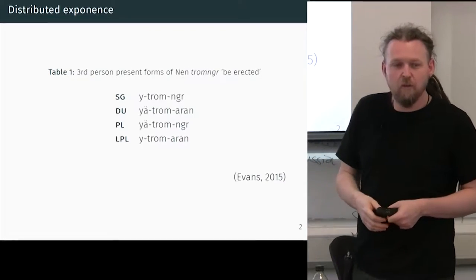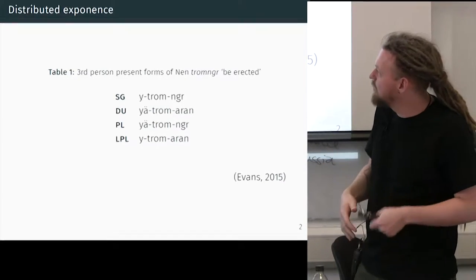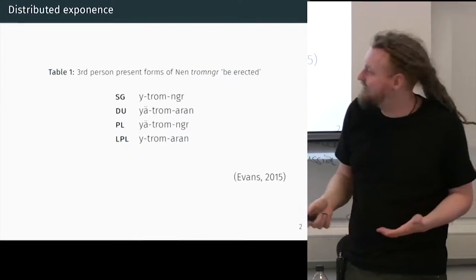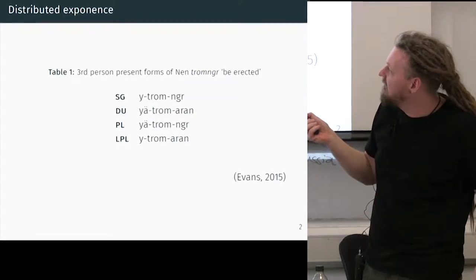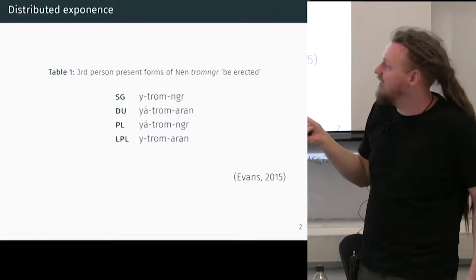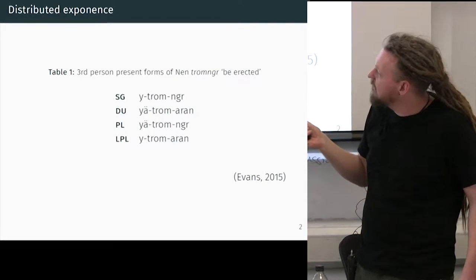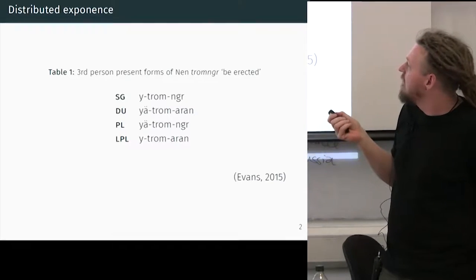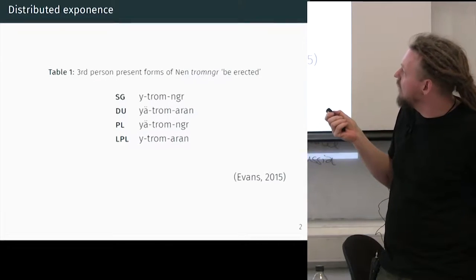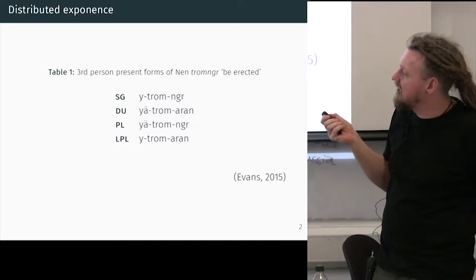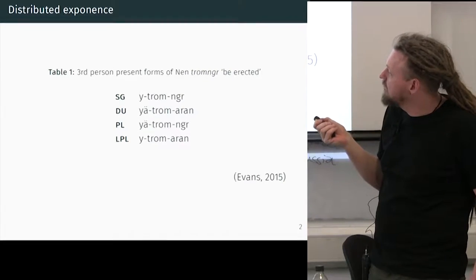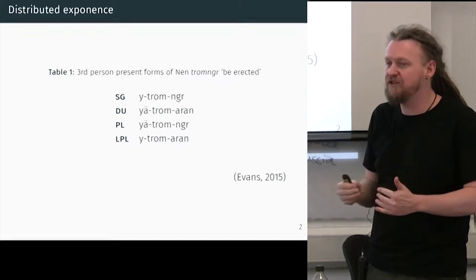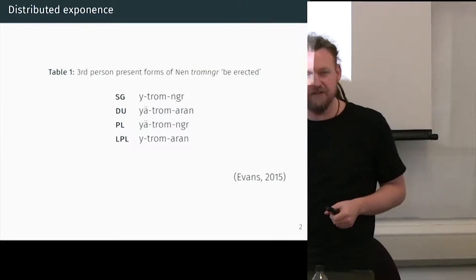If you ask what's the exponent of dual — what's marking dual? Well, it's here: it contrasts with singular. But if you just have 'ya' on its own, it's not enough because it's syncretic with the plural. The suffix, however, is also marking dual — it's different from singular and from plural — but since it's also used in the large plural, it's not enough to tell you. But by the combination of them, it unambiguously tells you that this is dual.